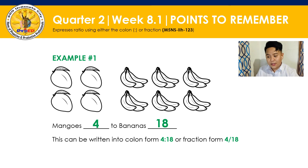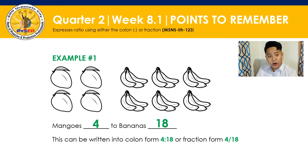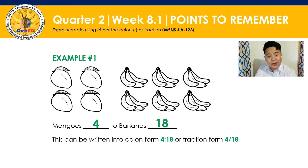Kung papansin ninyo, class, nauna yung mango sa banana. Kaya kapag isusulat natin siya sa colon form, mauuna ang bilang ng mango bago ang bilang ng banana. Kaya 4 to 18 or 4 colon 18. Sa fraction form naman, class, kung ano ang nauna, siya naman yung magiging numerator. At kung ano yung pangalawa, siya naman ang magiging denominator.